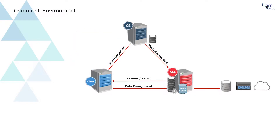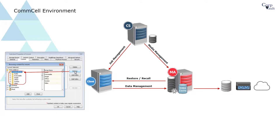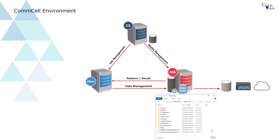Whenever a new data protection job starts, the Commvault software will generate a list of all the data objects — for example files, subdirectories, database objects, mailbox objects, etc. — that will be backed up from the source server. This list, along with the path to the actual archive file that stores the data on the media, is called the Index. The Index is stored in the Index Cache, which is a directory accessible by the Media Agent.